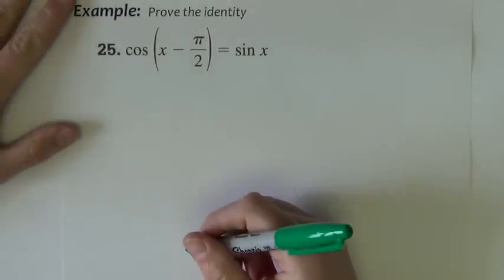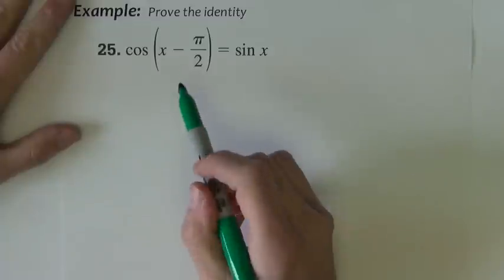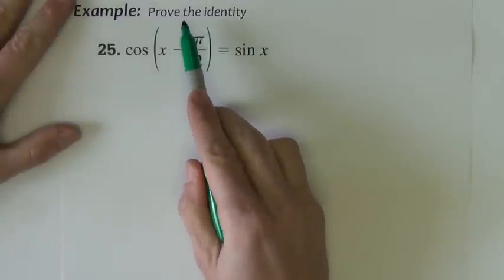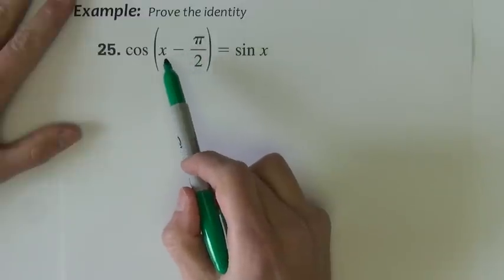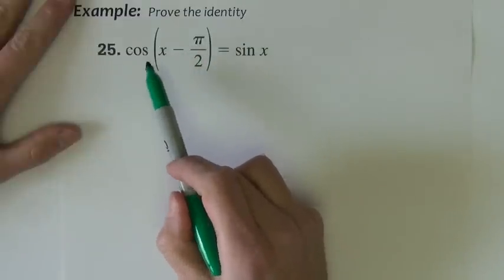Okay, finally to end this lesson, we're going to do a few examples where we are proving identities. So what we spent in section 5.1 and 5.2 doing, we're going to do it with sum and difference identities.